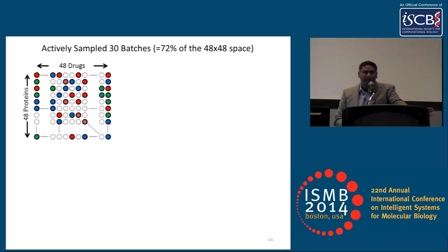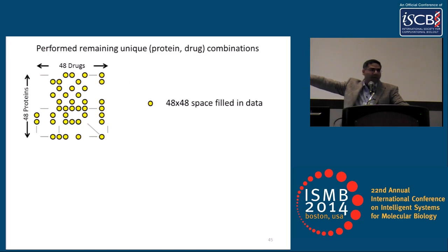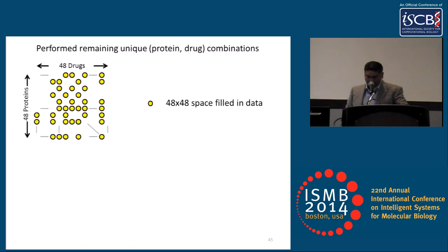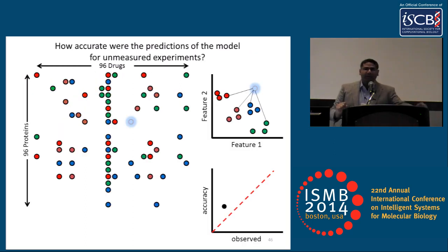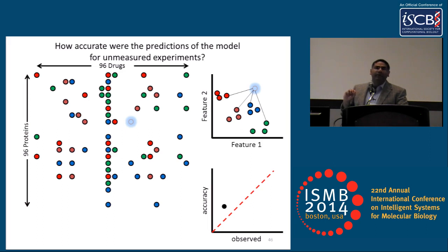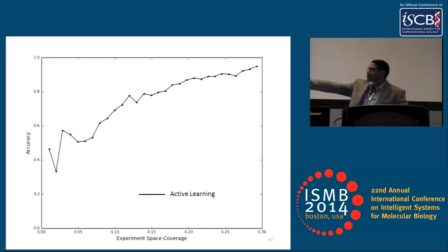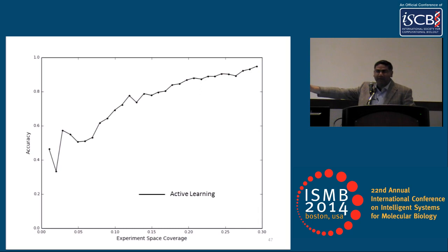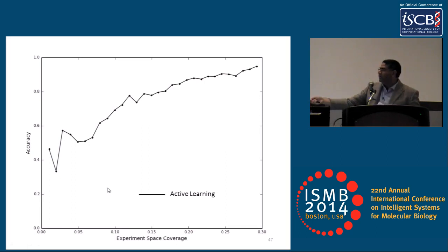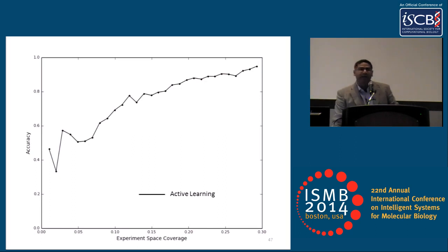In order to obtain a complete data set, we filled in the unique combinations of protein and drug not yet performed by the learner. We can then ask: how accurate were the predictions of the model for unmeasured experiments? Going across the x-axis — how much of the experiment space had been covered — we see the active learner's accuracy. Notice that early models emphasized ultimately incorrect correlations, but then the learner was able to very rapidly identify correct correlations and pick efficiently among experiments.